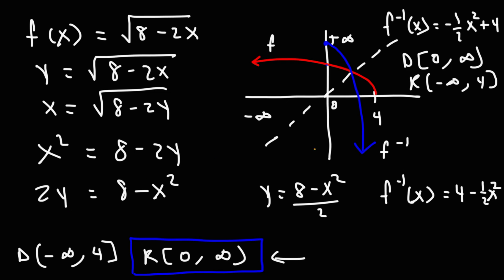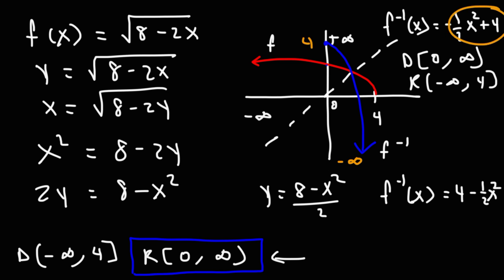If we follow the blue line, it's going to go from negative infinity, and if we follow it up, it's going to stop at 4. When you plug in 0 into this function, you get 4. So the range is from negative infinity to 4. But this is the answer we're looking for — the domain of the inverse function. It's the range of the regular function, which is 0 to infinity.